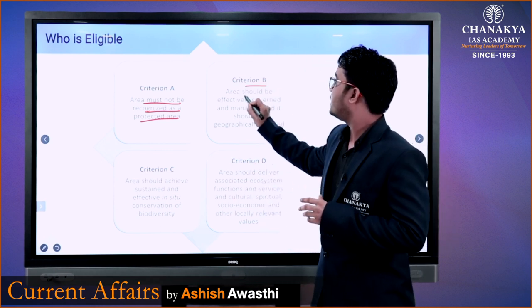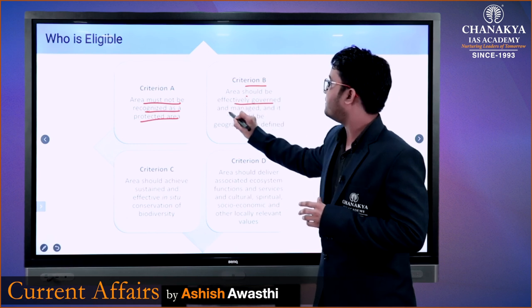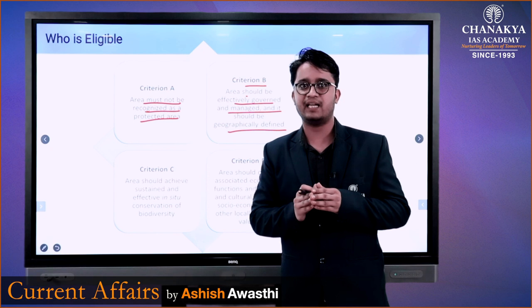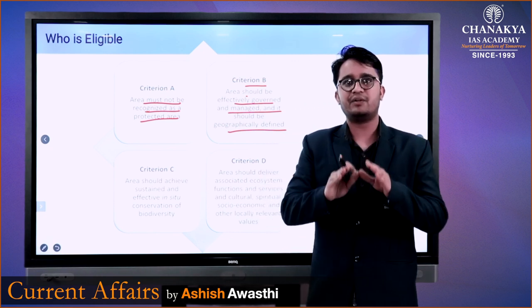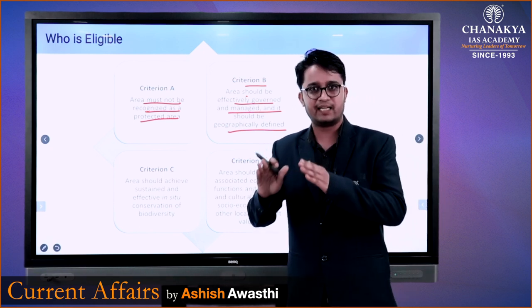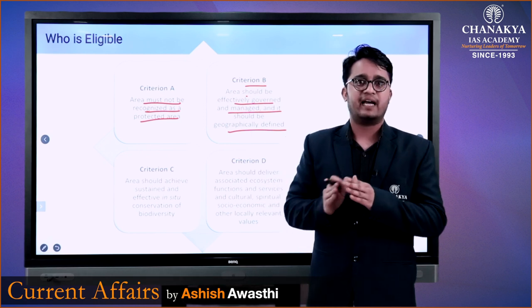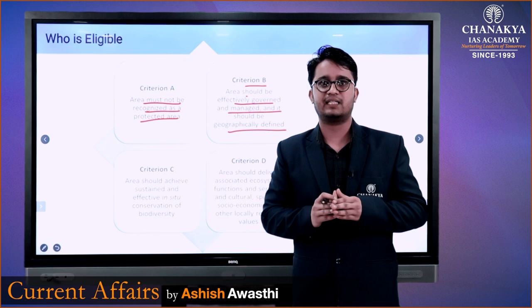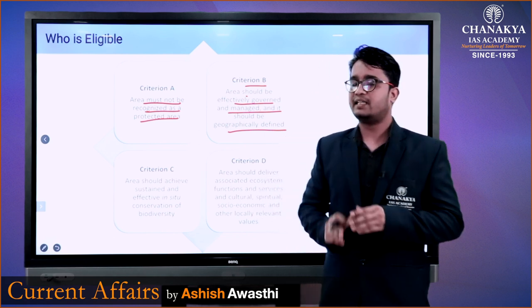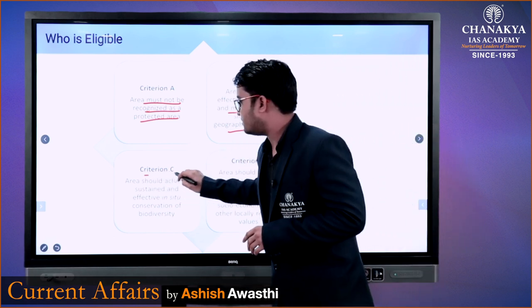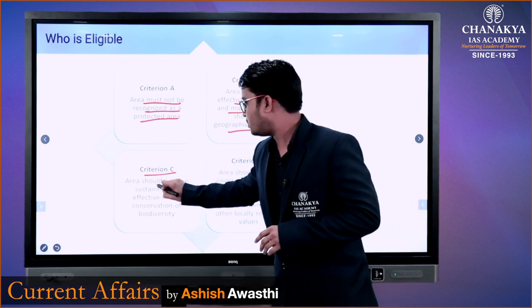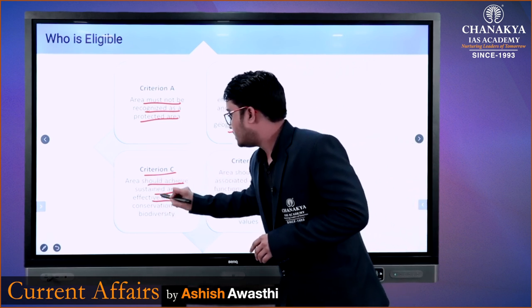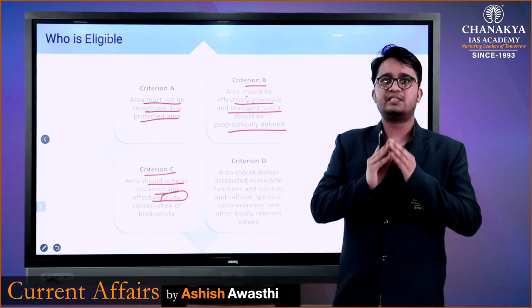Second Criteria है: Area Should Be Effectively Governed and Managed and It Should Be Geographically Defined। Geographically Defined का मतलब है कि एक Area होना चाहिए जिसको particularly define कर दिया गया हो कि कहाँ पर Area है — जैसे अरावली Biodiversity Park गुड़गाँव में है। Criteria C है: Area Should Achieve Sustained and Effective In-Situ Conservation, अर्थात वहाँ पर जो conservation होगा वो in-situ होगा।